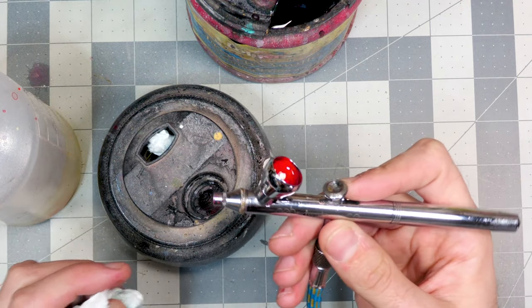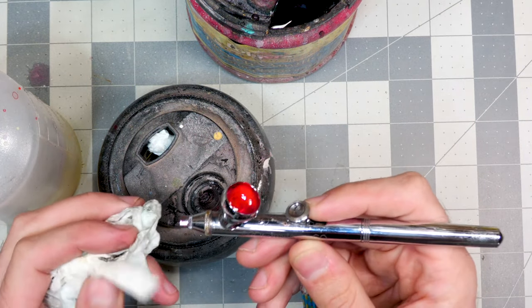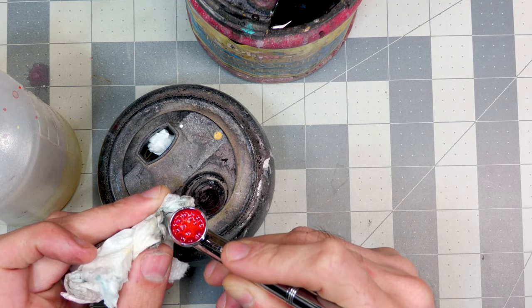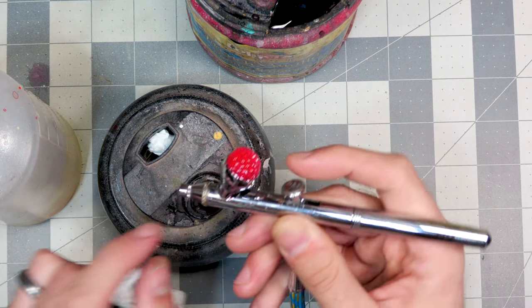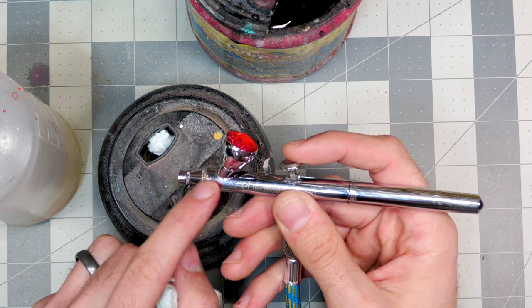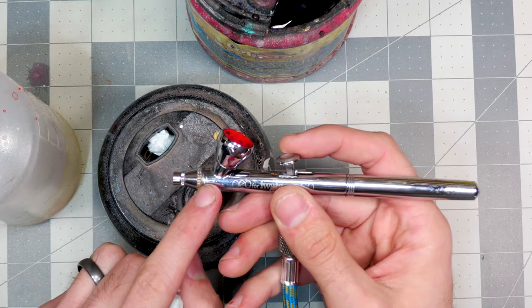Another thing you can do is take a paper towel and you got to be careful when you're doing this not to smash your needle or bend it. But you can hold it up against there to stop the air. And you push down the air and pull back like you're painting. Whenever you're blocking the front of it, it's causing the air to come down and then turn around and come back out the top. So that'll also kind of help knock some of that paint out of the front of there.